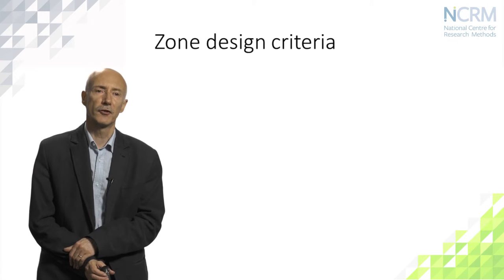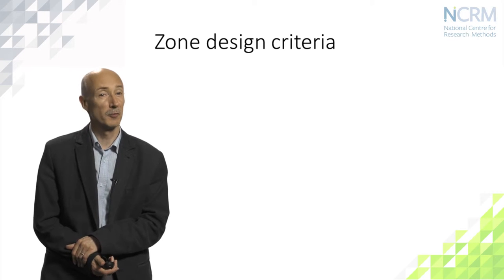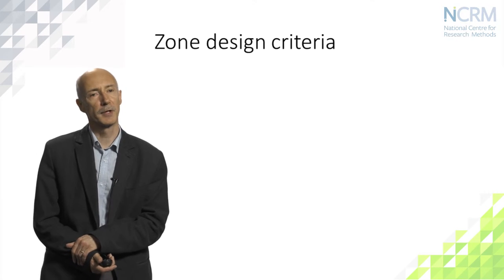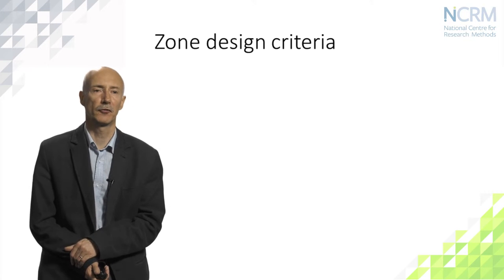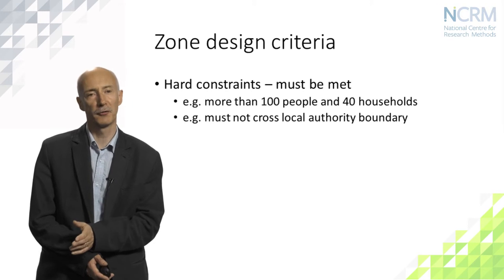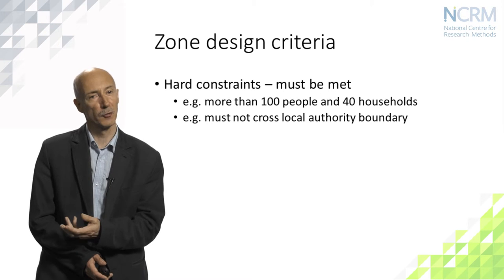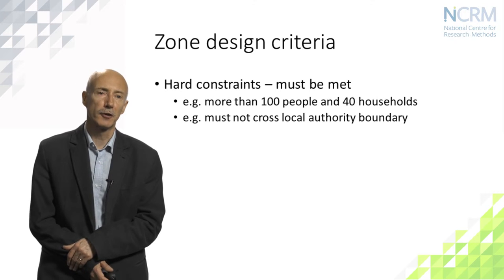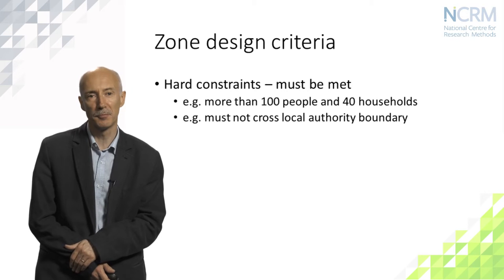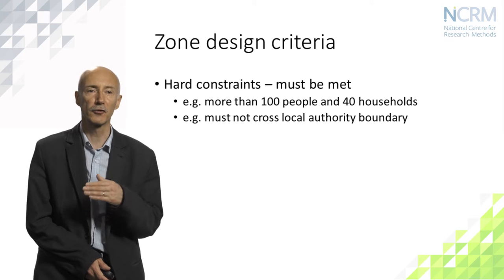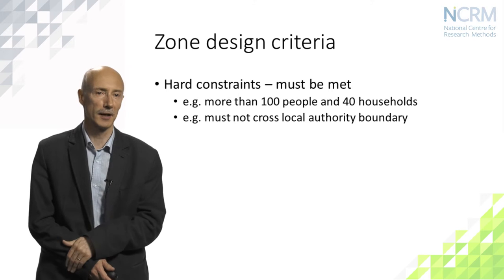Zone design criteria can be thought of as hard constraints — things which must be met — and soft constraints, where we try to maximise some continuous function. Examples of hard constraints include that every zone must contain more than 100 people and more than 40 households to meet a confidentiality threshold. A geographical hard constraint might be that zones are not permitted to cross a local authority or region boundary — these are absolutes, and the zone design can be set up so no solutions violate those rules.